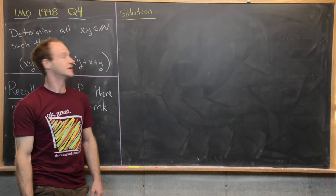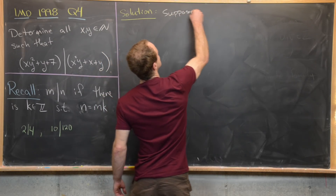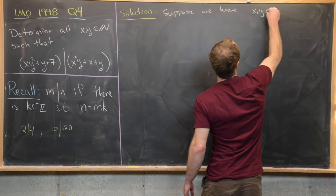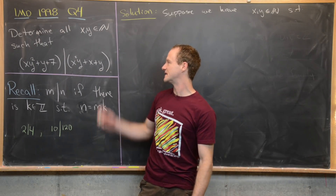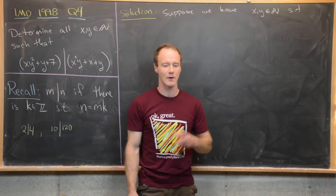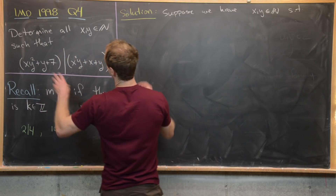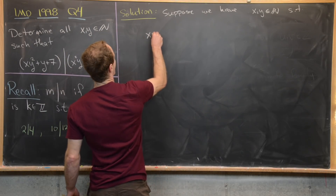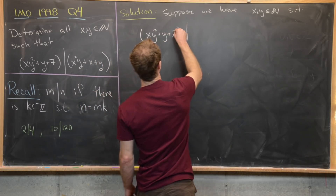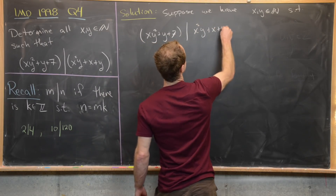Let's jump into a solution. Suppose we have two positive integers x and y such that we have this divisibility relationship — in other words, suppose that we have a solution. We want to find some rules that the solution must follow. So we have xy² + y + 7 divides x²y + x + y.